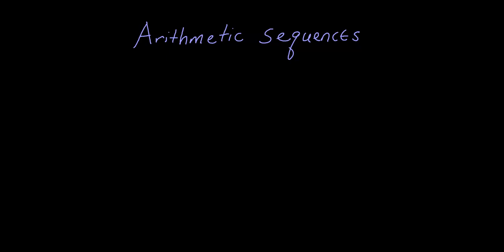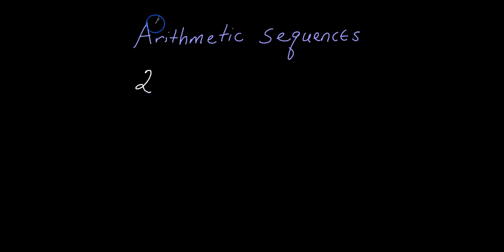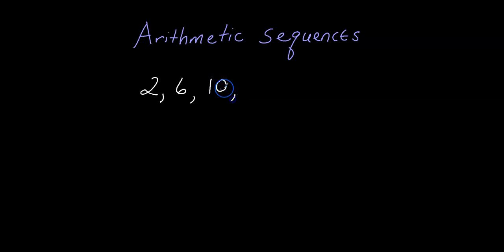Hey math students, let's learn about arithmetic sequences. Let's just generate one so you can see exactly what it means. We'll start with 2, then add 4 each time: 2, then 2 plus 4 is 6, then 6 plus 4 is 10, then 10 plus 4 is 14, and so on. That's what an arithmetic sequence is — you start with some number and add a constant each time.